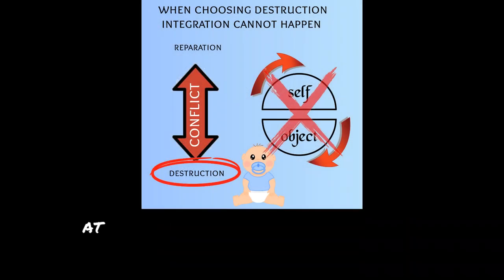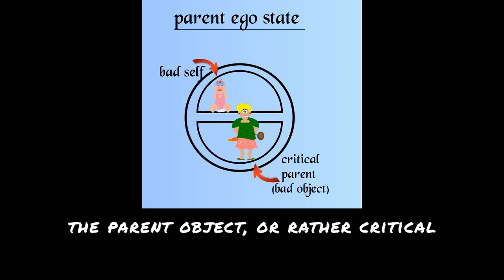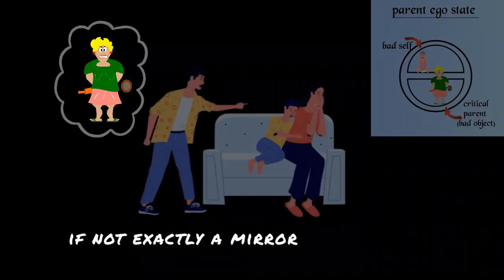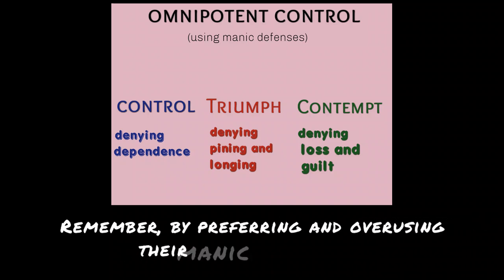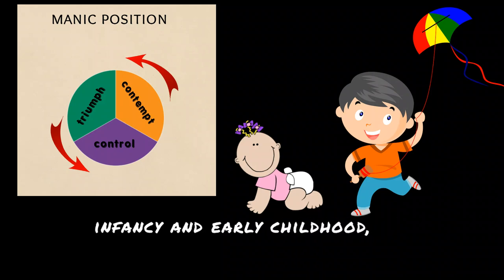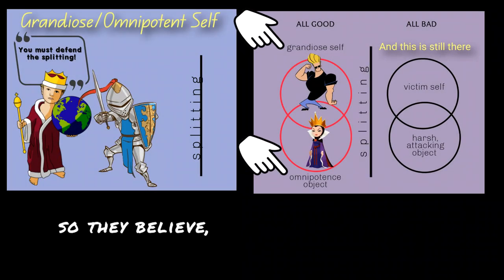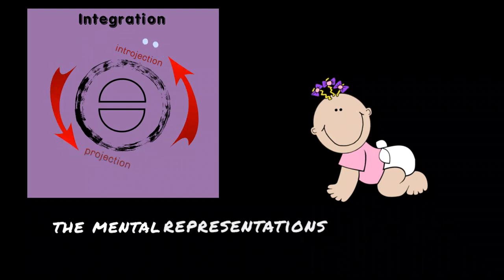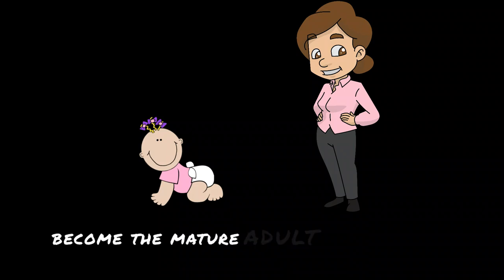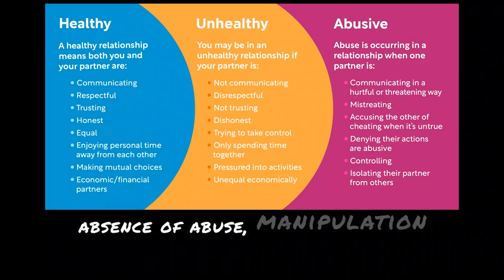For the pathological narcissist, integration doesn't take place at all because of their arrested development. Therefore, the parent ego state will consist mostly of the critical parent object — if not exactly a mirror image — as the self will have been shriveled to near non-existence. By preferring and overusing their manic defenses in infancy and early childhood, the narcissist has killed off their real self in favor of a false self — a self they believe they can control and use to manipulate the external world to meet their needs and fantastical desires. You can see how important integration of mental representations in childhood is to becoming a mature adult able to function in relationships in a healthy way, absent of abuse, manipulation, and deception.